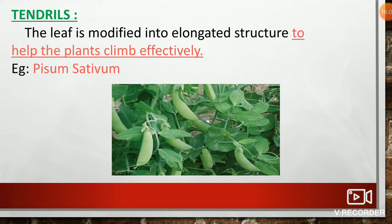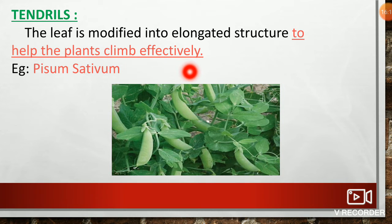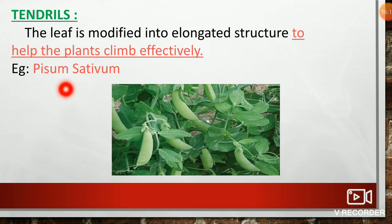Next, tendrils: The leaf is modified into an elongated structure to help the plants climb effectively. For example, Pisum sativum.